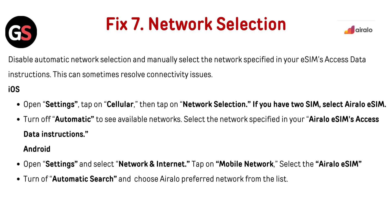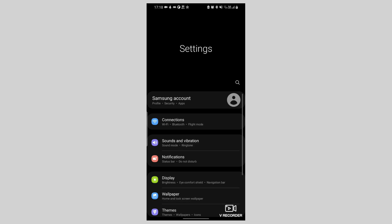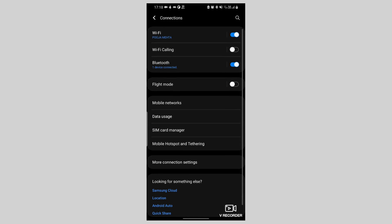Fix 6: Network selection. Disable automatic network selection and manually select the network specified in your eSIM's access data instructions — this can sometimes resolve connectivity issues. For iOS: open Settings, tap on Cellular, then tap Network Selection. If you have two SIMs, select the Airalo eSIM. Turn off Automatic and select the network specified in your Airalo eSIM's access data instructions. For Android: open Settings, select Network and Internet, tap on Mobile Network, select the Airalo eSIM, turn off automatic search, and choose the Airalo preferred network from the list.